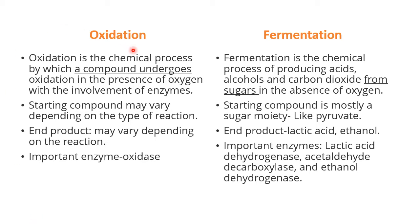Oxidation is a chemical process by which a compound undergoes oxidation, but in the presence of oxygen. So oxygen is necessary for oxidation and there are some enzymes which are involved. The starting compound in the chemical process of oxidation may vary depending upon the type of reaction that is happening. The end product also varies depending on the reaction, and the important enzyme is oxidase.